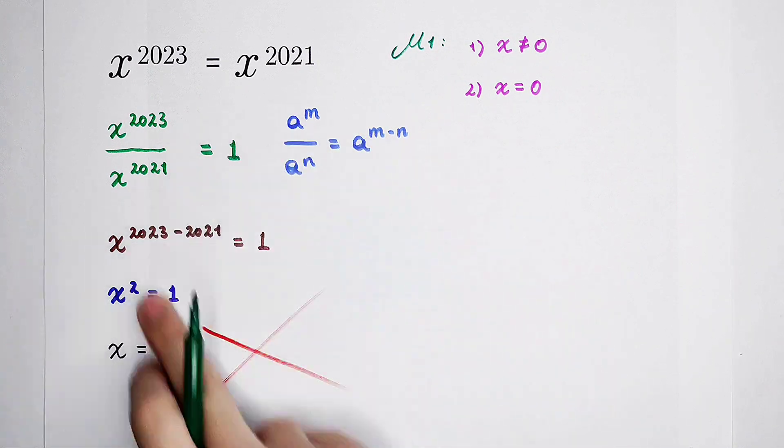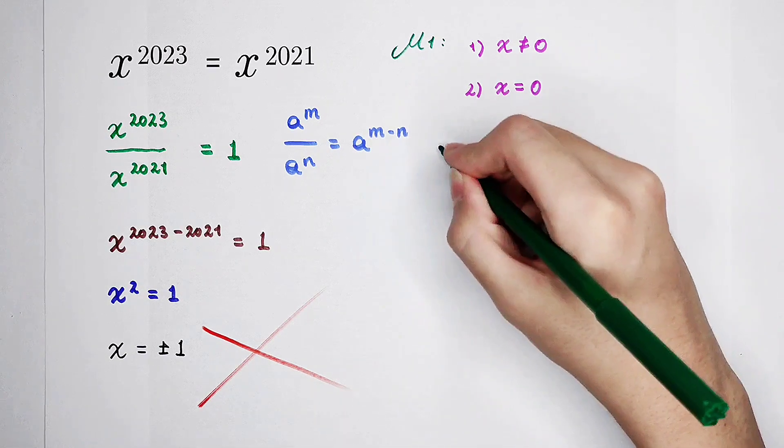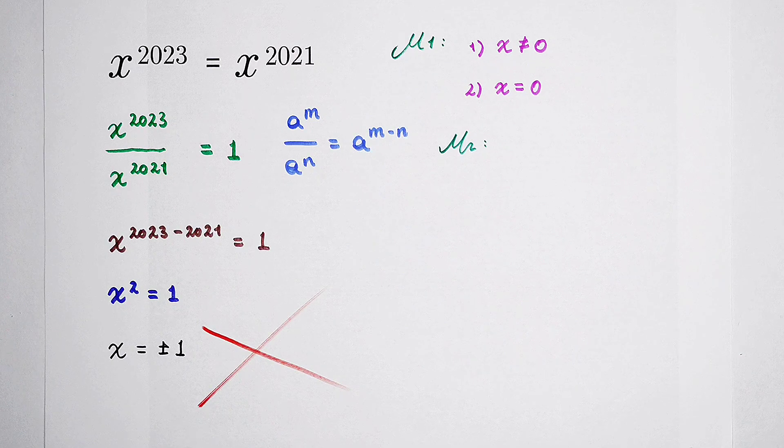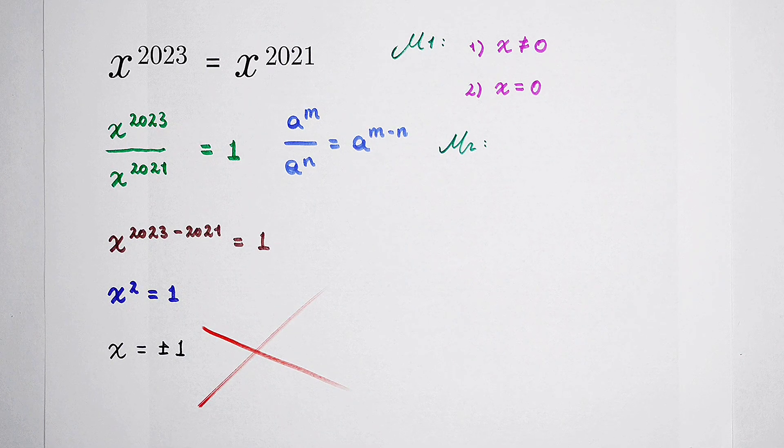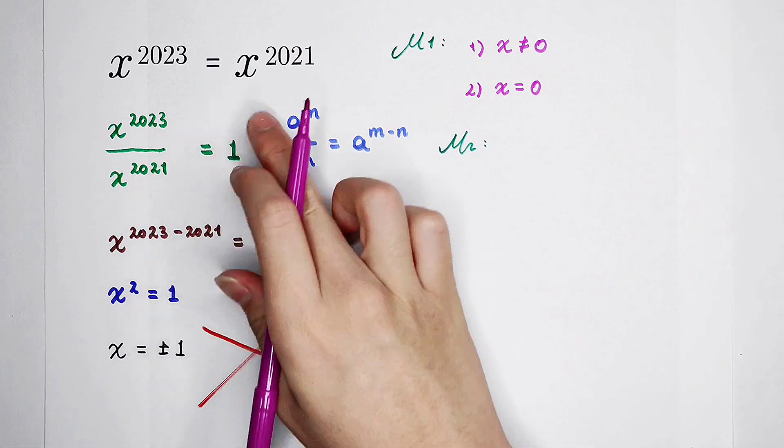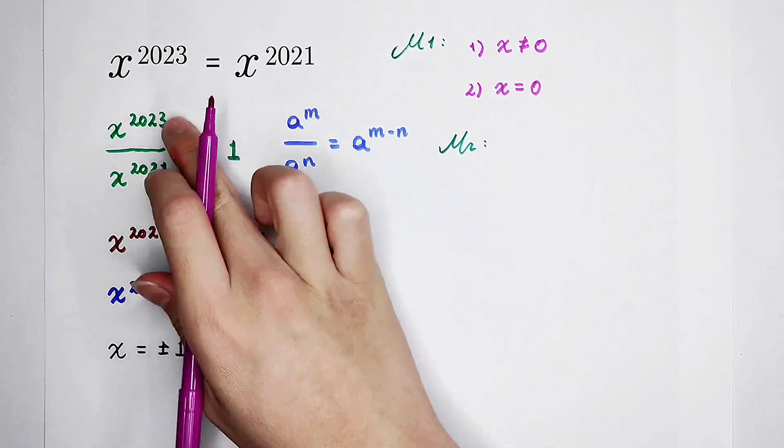If you don't want to solve it wrongly, then use the second method. The second method is by subtraction, not by division. So now, we should subtract x to the power of 2021 from both-hand side.